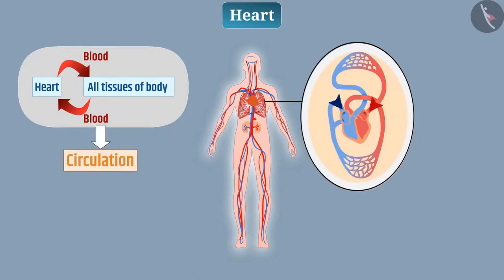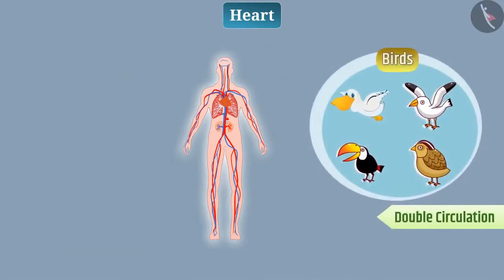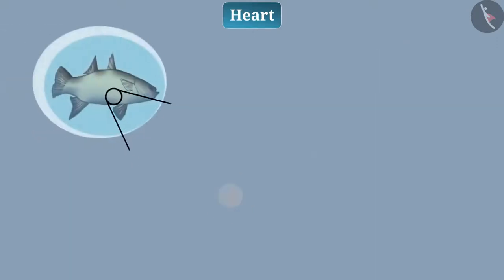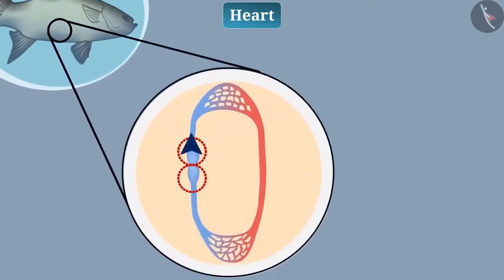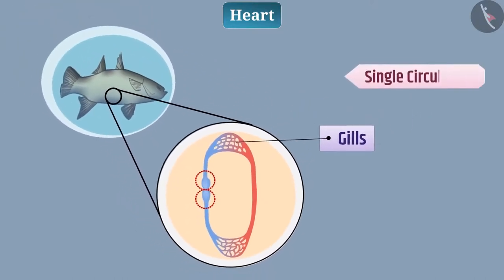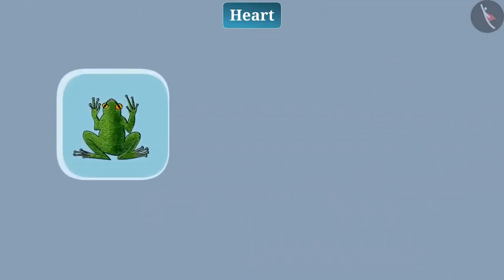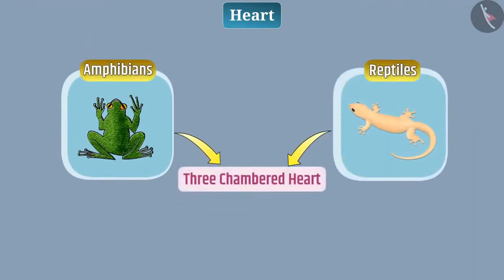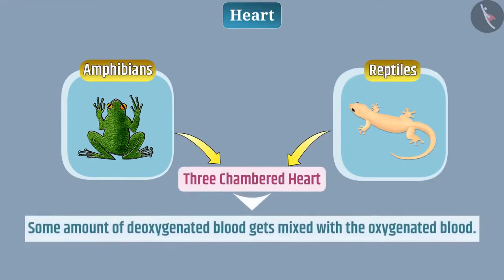Since blood enters the heart twice in each cycle of circulation, it is called double circulation. Birds and mammals have double circulation. Fish have two chambers in the heart — blood is carried from the heart to the gills for oxygenation, and from the gills, oxygenated blood is transported to all body parts. Thus, in every round of circulation in fish, blood enters the heart once — we call it single circulation. Animals such as amphibians and reptiles have a three-chambered heart, and for this reason, some amount of deoxygenated blood gets mixed with the oxygenated blood.